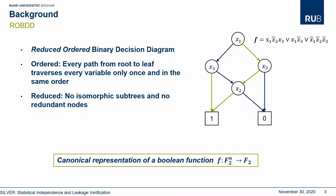In addition to basic BDDs, ROBDDs are ordered, which means for every path from root to leaf, every variable is traversed in the same order. And they are reduced, which means they are minimized such that there are no isomorphic subtrees and no redundant nodes in the BDD. To sum up, ROBDDs are canonical representations of a boolean function.